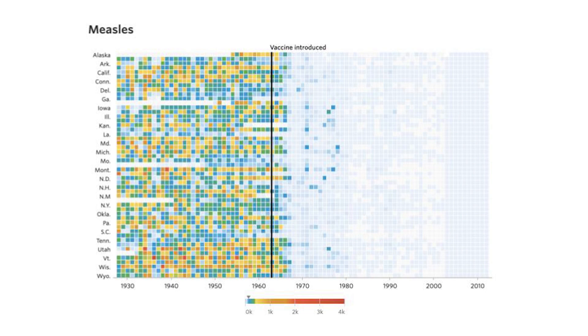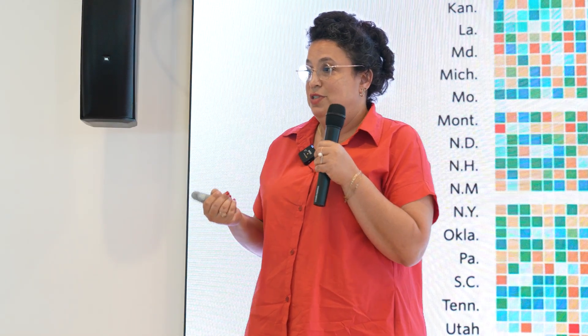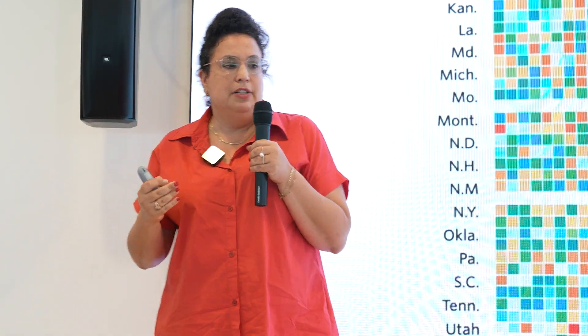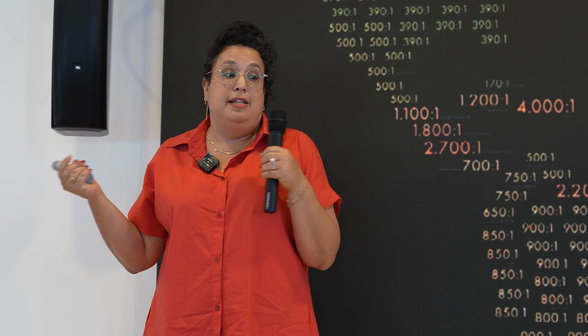You can clearly see there's a problem at the beginning of the graph, and then in the 1960s something happened — the vaccine was introduced. That's very compelling. The second superpower is that using images makes it easier for us to understand. Our minds can read images 60 times faster than words or numbers, so when we present data as an image, people remember it more and in more detail.